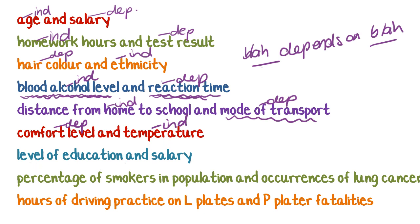Level of education and salary. Does level of education depend on your salary — does how much you make affect what level of education you have? That doesn't really make sense. But 'salary depends on education level' — the higher your education level, the more money you make — that could make sense. So salary would be the dependent variable and level of education would be the independent variable.